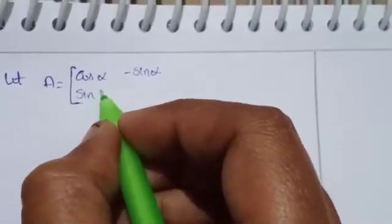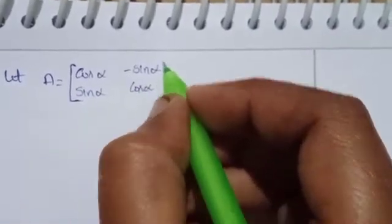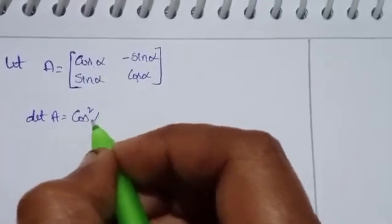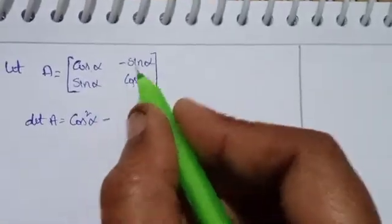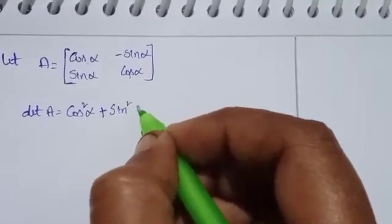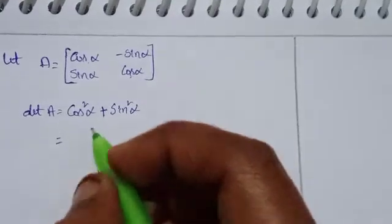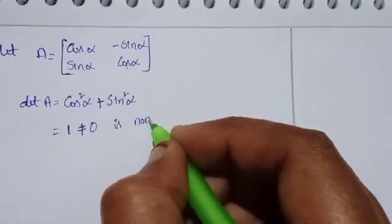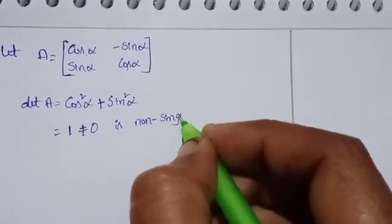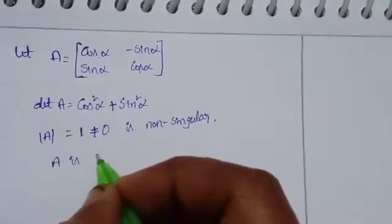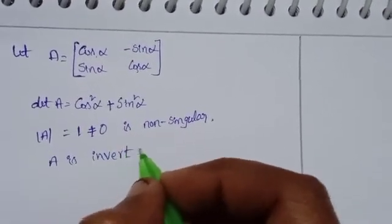Det(A) equals cos alpha times cos alpha minus (minus sin alpha)(sin alpha), which equals cos squared alpha plus sin squared alpha, equals 1. Since det(A) = 1, it is not equal to 0, so the matrix is non-singular and A is invertible.